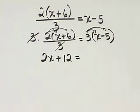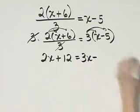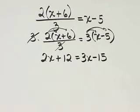and let's use the distributive property again, 3 times x is 3x minus 3 times 5 is 15. And now let's continue solving.